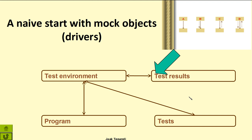To avoid repetitive manual testing, it is possible to apply test automation. As a naive start, an automated testing environment causes the component to be tested like a mock driver in bottom-up integration testing. It uses tests from the test store and outputs the testing results. For example, different X-unit testing frameworks follow this approach.